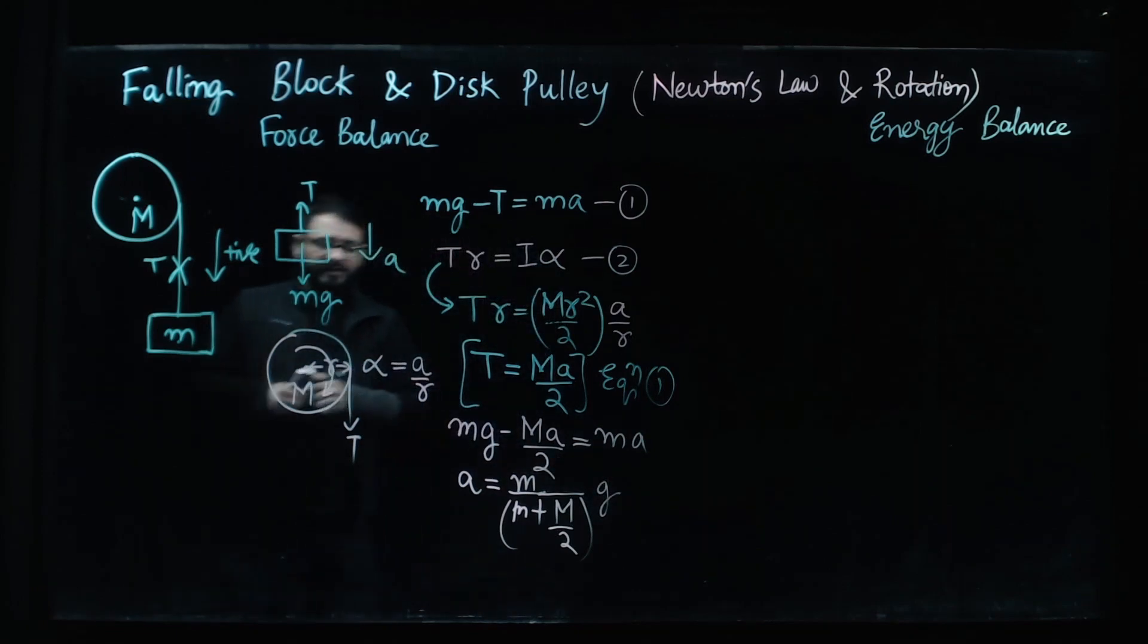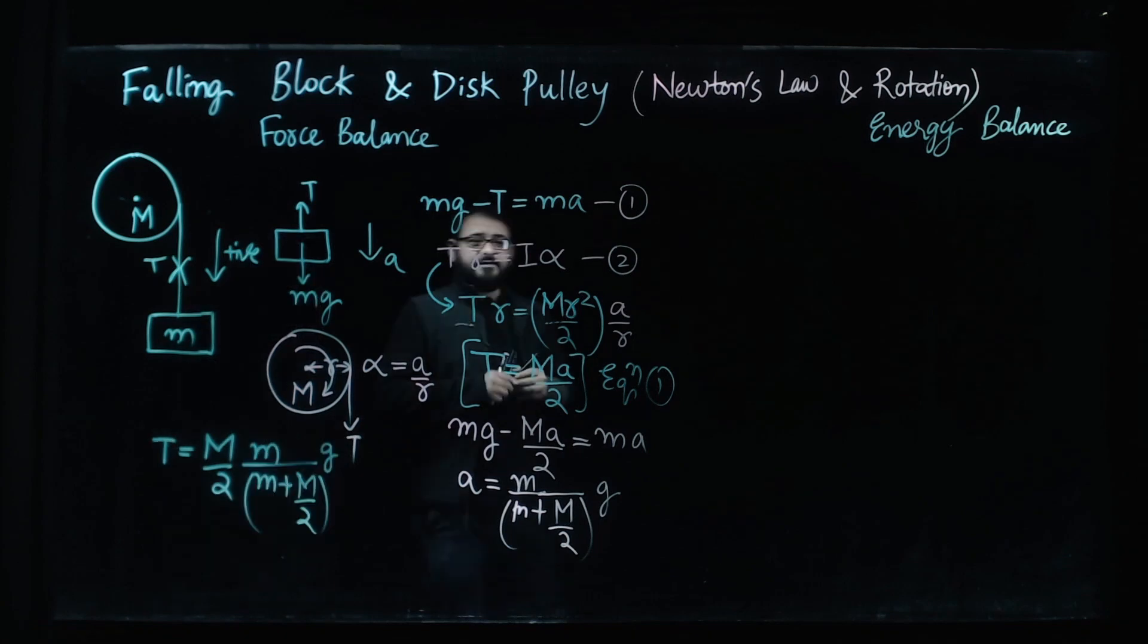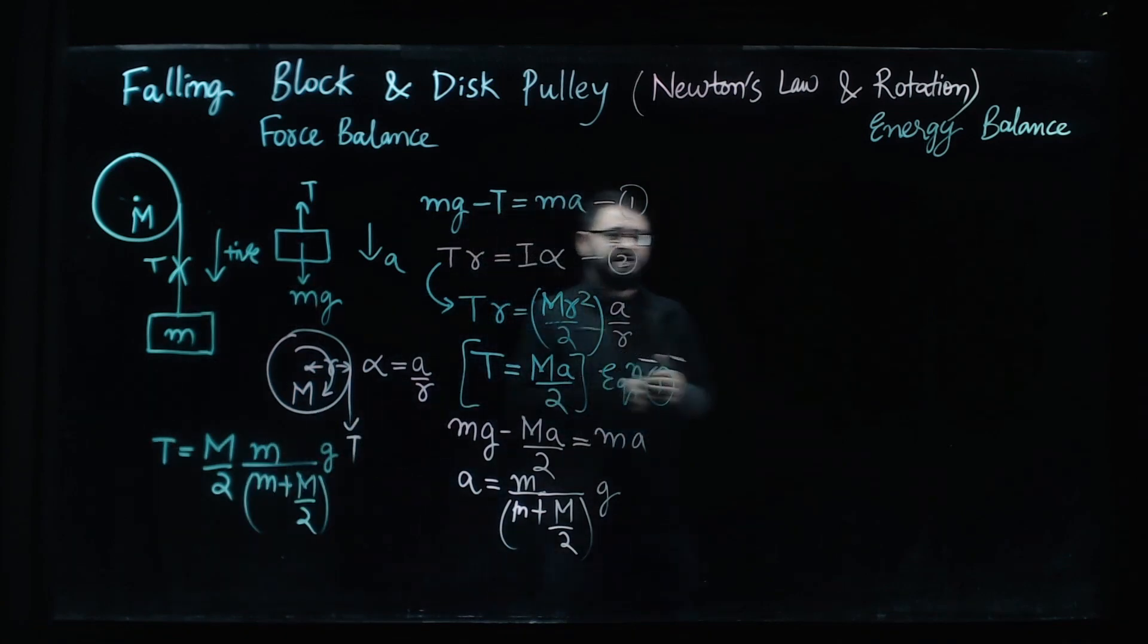Tension as T. So you can clearly write our tension is equal to M divided by M by 2. So let's rewrite it. So we have got both of these answers.